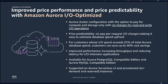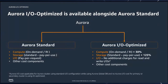For customers with a higher IO-heavy pattern, that's where the savings materialize. Our analysis shows that if IO is more than 25% of your total Aurora spend, you can get up to 40% cost savings. Additionally, we have made software optimizations that improve throughput and reduce latency for IO intensive applications. Aurora IO Optimized is available for both Aurora PostgreSQL and Aurora MySQL, for Aurora Serverless V2 and provisioned on-demand and Reserved Instances.